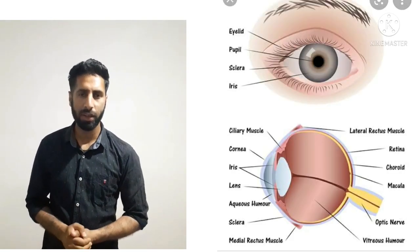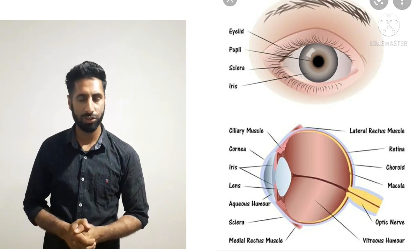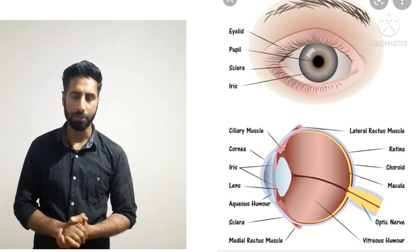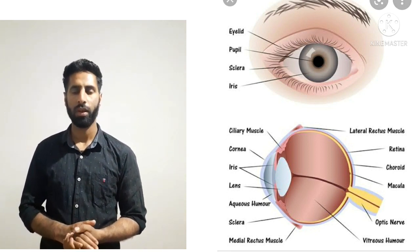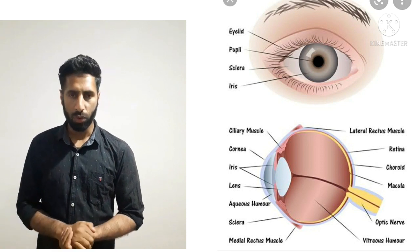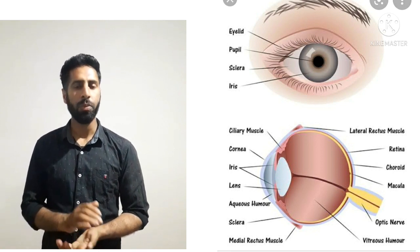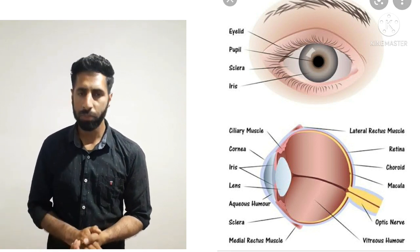Assalamu alaikum dear students. Today in this video I am going to explain the structure of the human eye. As we all know, the human eye is that part of the human body by the help of which we are able to see the colorful world.